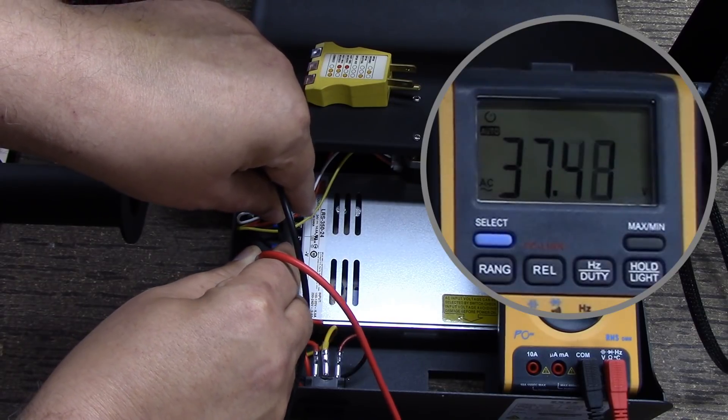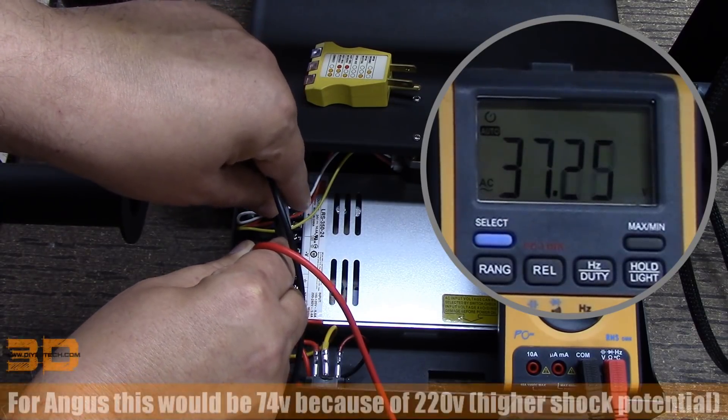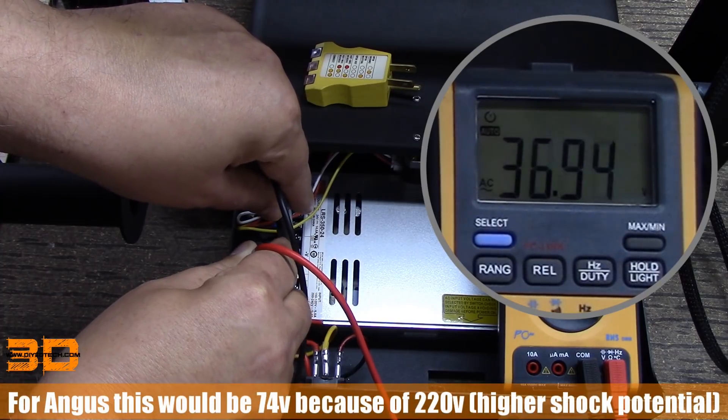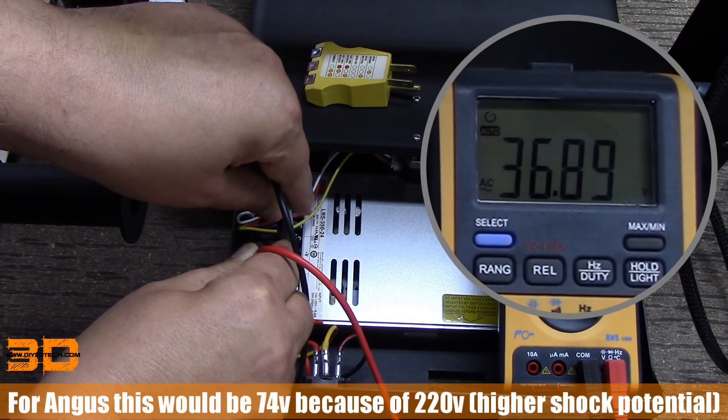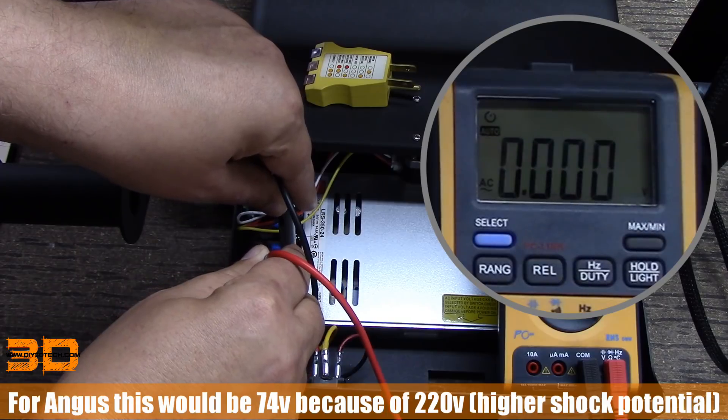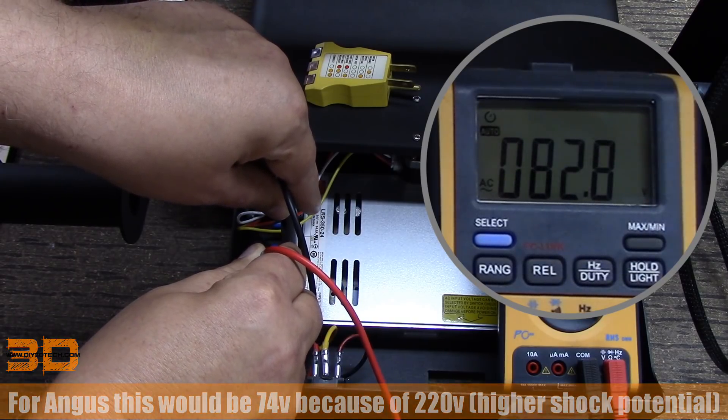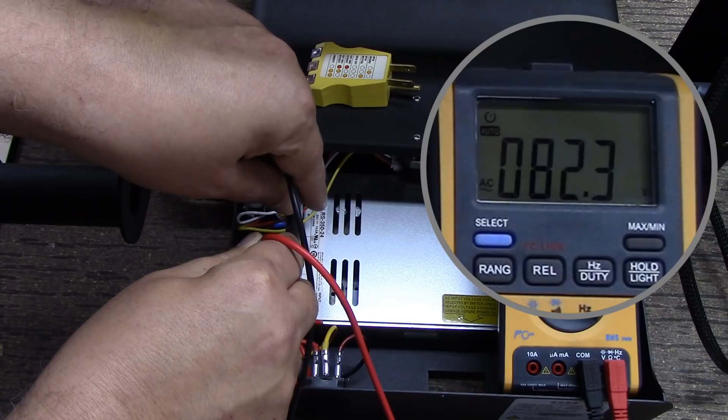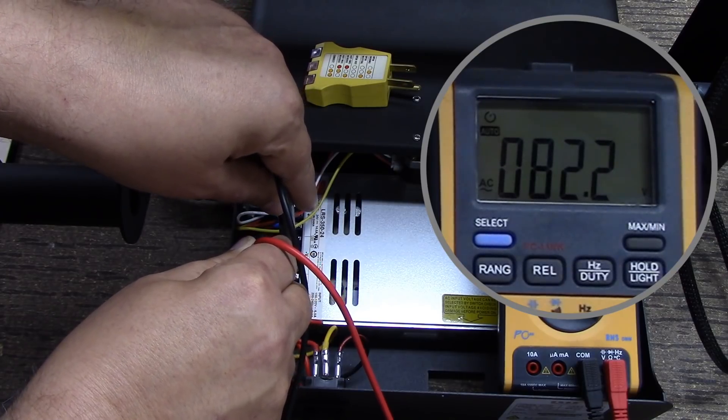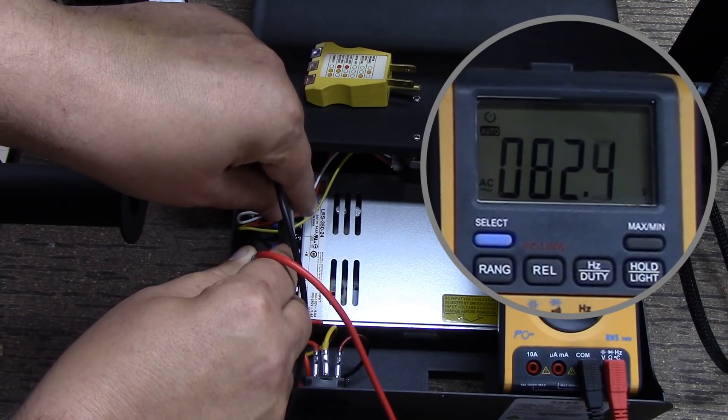What you can see is I now have 37 volts on my neutral. I shouldn't have any voltage on my neutral. Now I'm going to touch my hotline. Notice I have 82 volts. So I have around 120 volts crossing here. This shouldn't be.